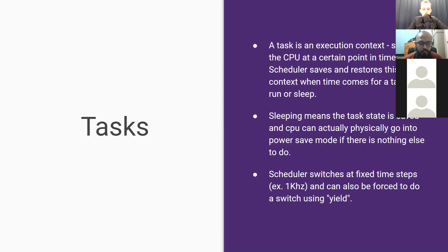Normally the scheduler switches at fixed time steps. When you run an RTOS, you would be switching at one kilohertz — that's a very common rate. But it's not the only way to switch to the next task. Another way of switching is when data becomes available. If you have a queue and you push data into it and there is a higher priority task waiting for that data, the scheduler can automatically switch to that higher priority task to process the data. Your code doesn't need to worry about this switching — the context switching is kind of abstract.